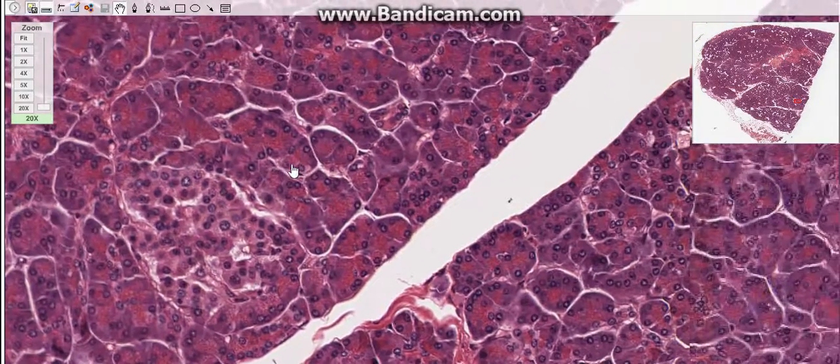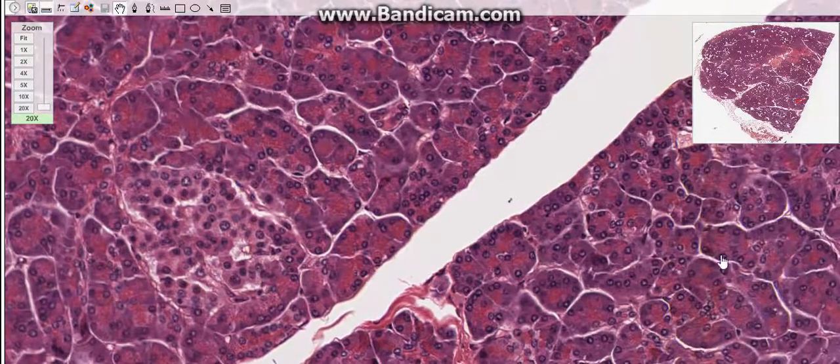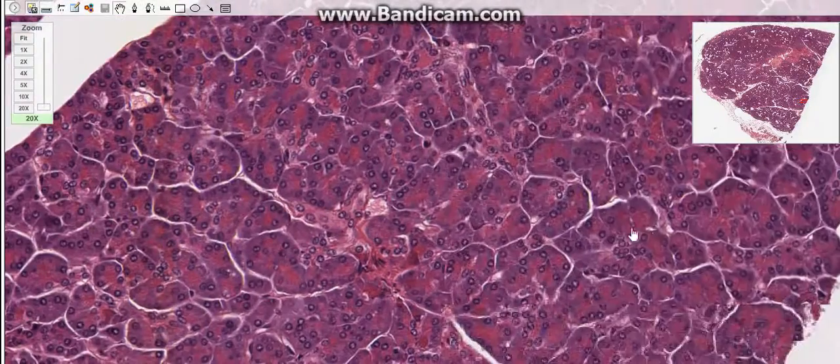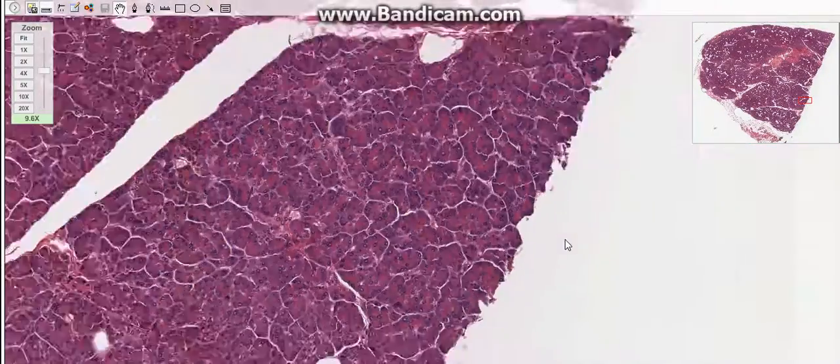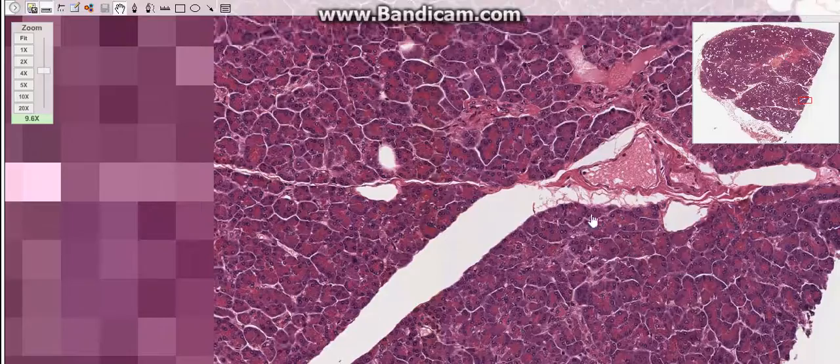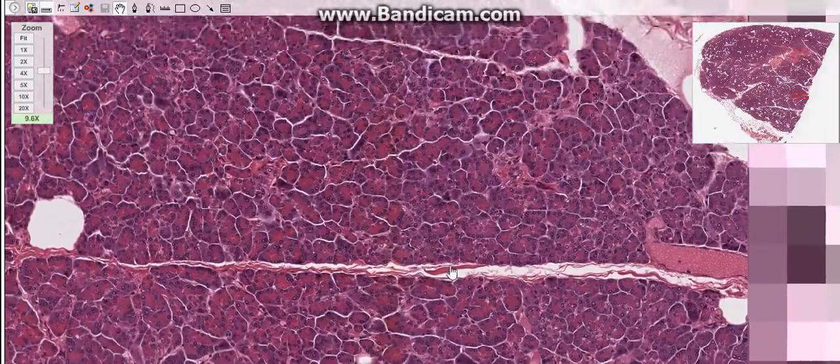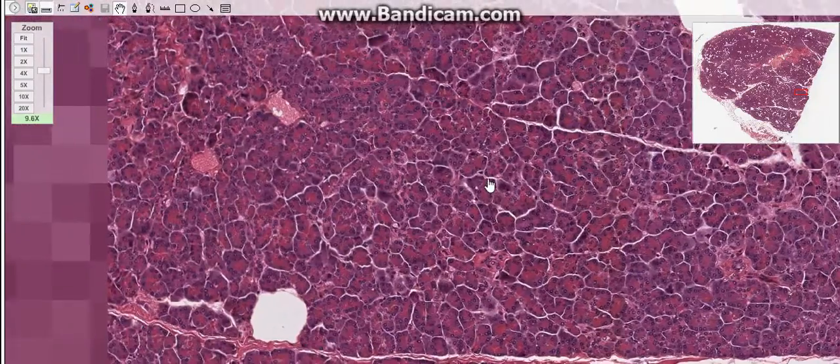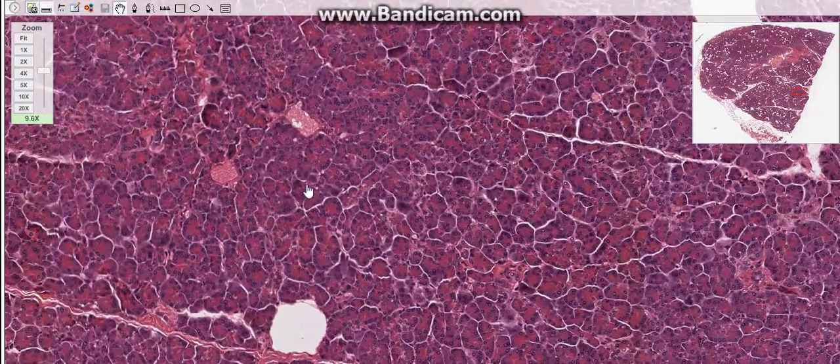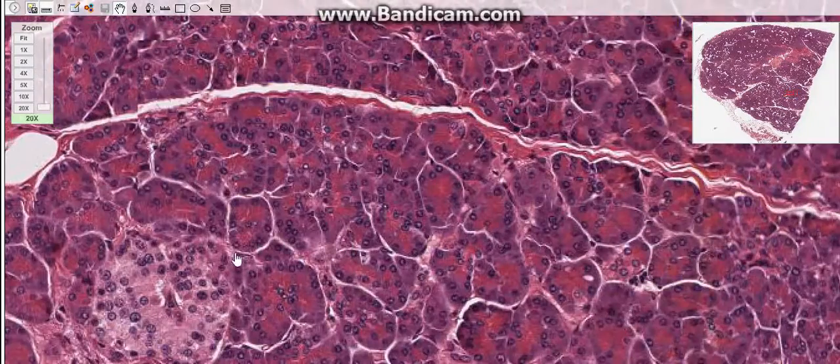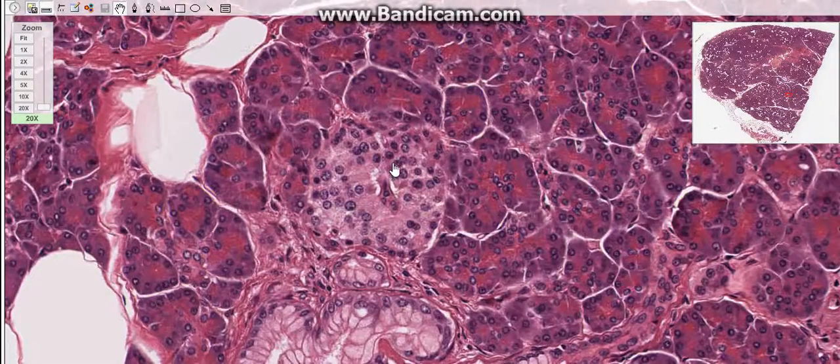There are also the delta 1 cells. These cells secrete vasoactive intestinal peptide, that is VIP. They are secreted by the D1 cells, that is the delta 1 cells. The VIP hormone has an effect that is similar to glucagon but also stimulates the exocrine function of the pancreas.